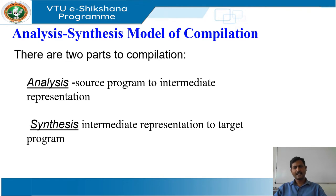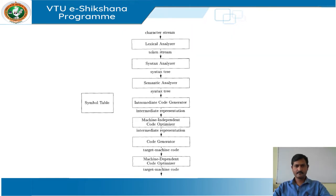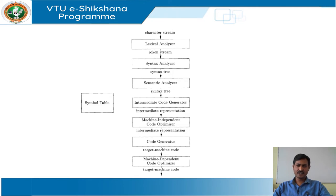The synthesis part constructs the desired target program from the intermediate representation and the information in the symbol table. The analysis part is often called the front end of the compiler and the synthesis part as the back end. If we examine the compilation process in more detail, we see that it operates as a sequence of phases, each of which transforms one representation of the source program to another. A typical decomposition of a compiler into phases is as shown in the figure.